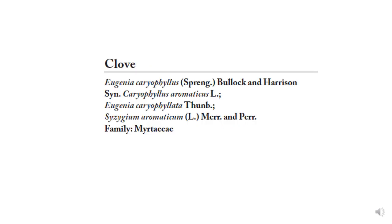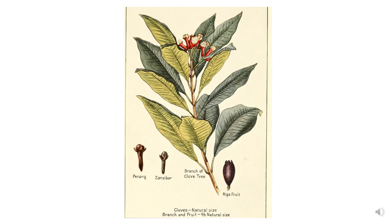The botanical name of clove is Eugenia caryophyllus, synonymous with Caryophyllus aromaticus. It is also called Eugenia caryophyllata or Syzygium aromaticum. It belongs to the family Myrtaceae.